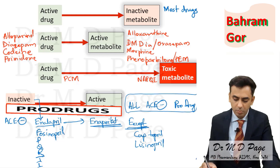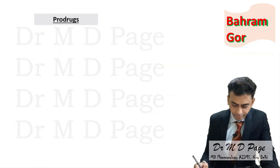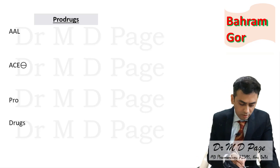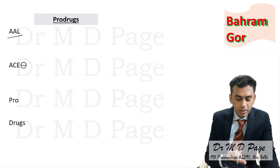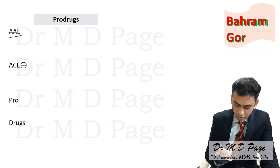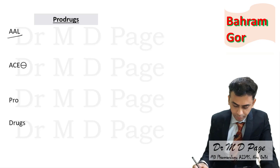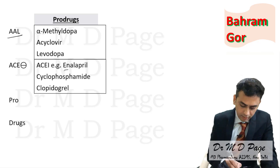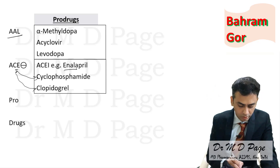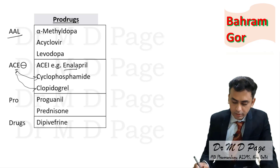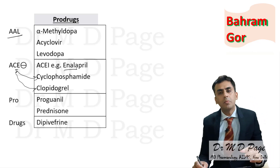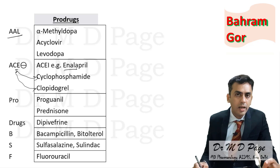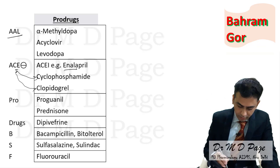To remember pro-drugs: use the mnemonic 'All ACE Inhibitors Are Pro-drugs.' A stands for alpha methyl dopa, acyclovir, and levodopa; ACE inhibitors like enalapril; C for cyclophosphamide and clopidogrel; also proguanil and prednisolone. Additionally, remember BSF — Border Security Force — standing for bichampicillin, bitolterol, sulfasalazine, sulindac, and 5-fluorouracil.